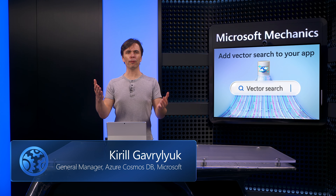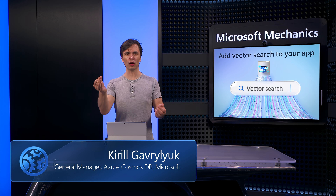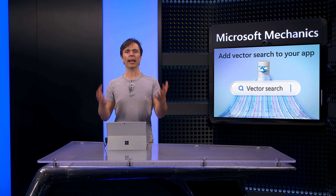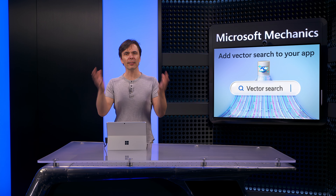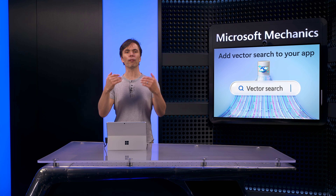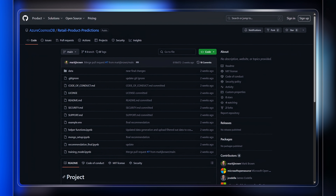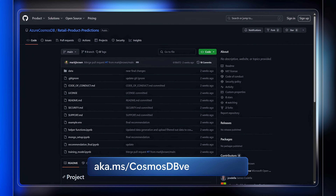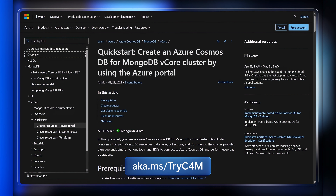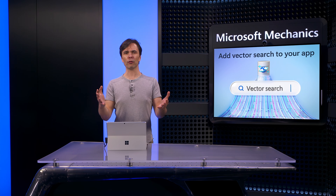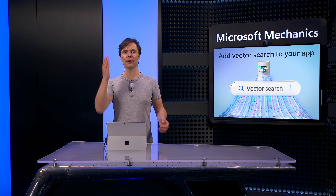I've shown you the power of using pre-computed vectors in Azure Cosmos DB combined with collaborative filtering and large language models for generative AI to help you build next-level, real-time recommendation systems of limitless scale. You can walk through this entire example yourself — we've published the eShop and our notebook on GitHub at aka.ms/CosmosDBvectorsample. You can try out Cosmos DB for MongoDB for free at aka.ms/tryC4M. Keep watching Microsoft Mechanics for the latest updates, and thank you for watching!